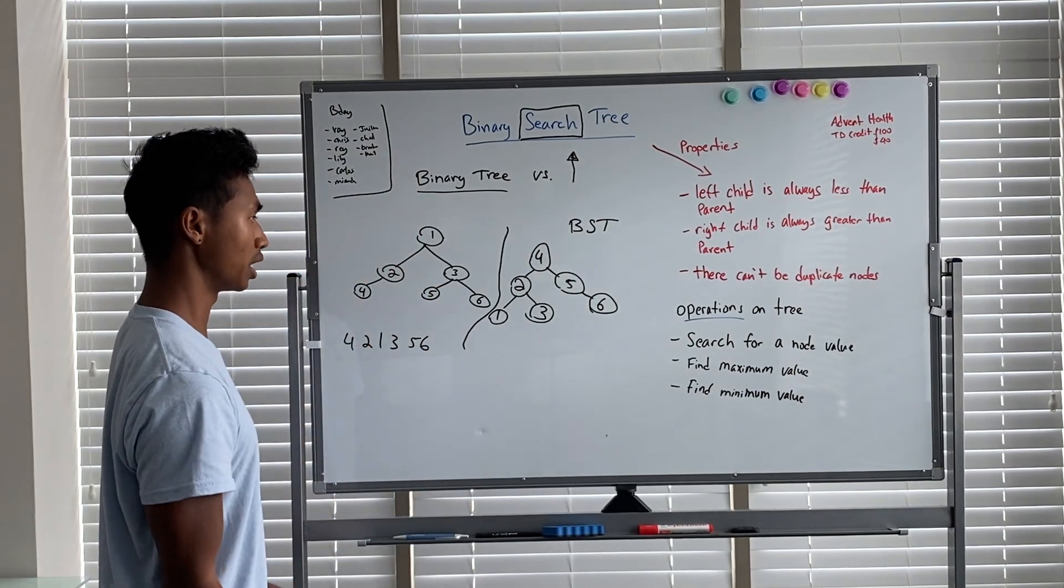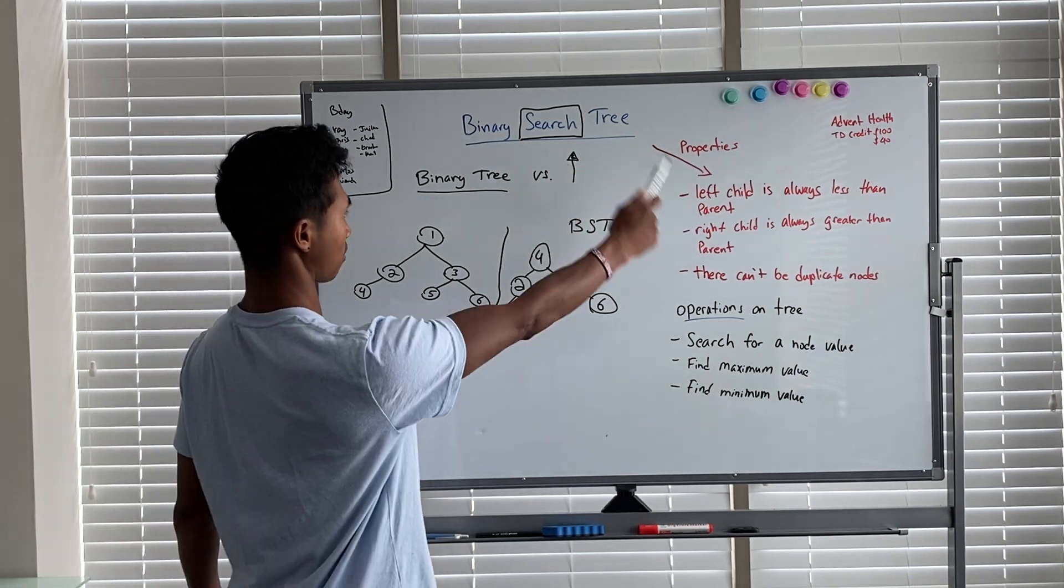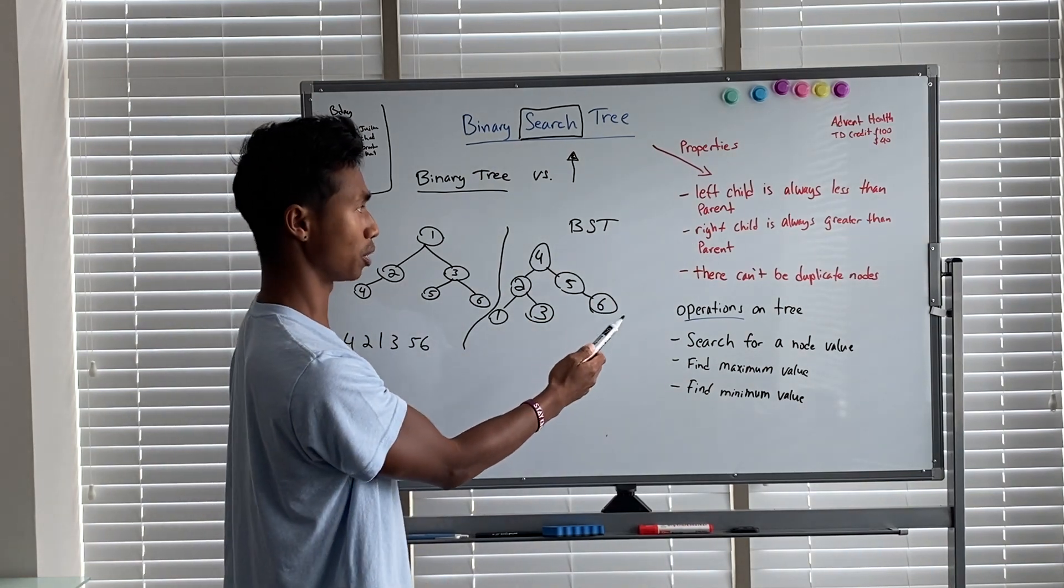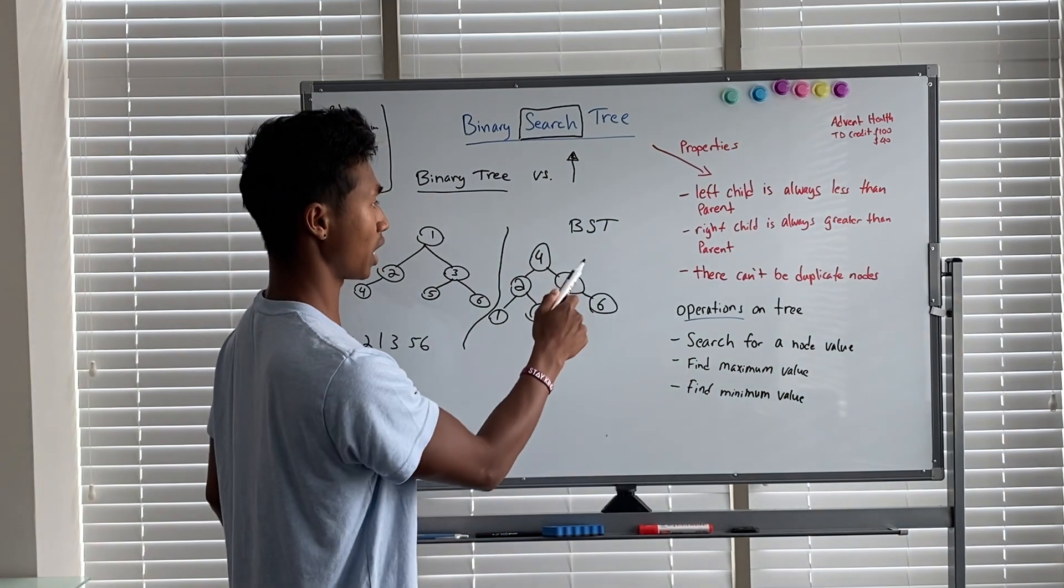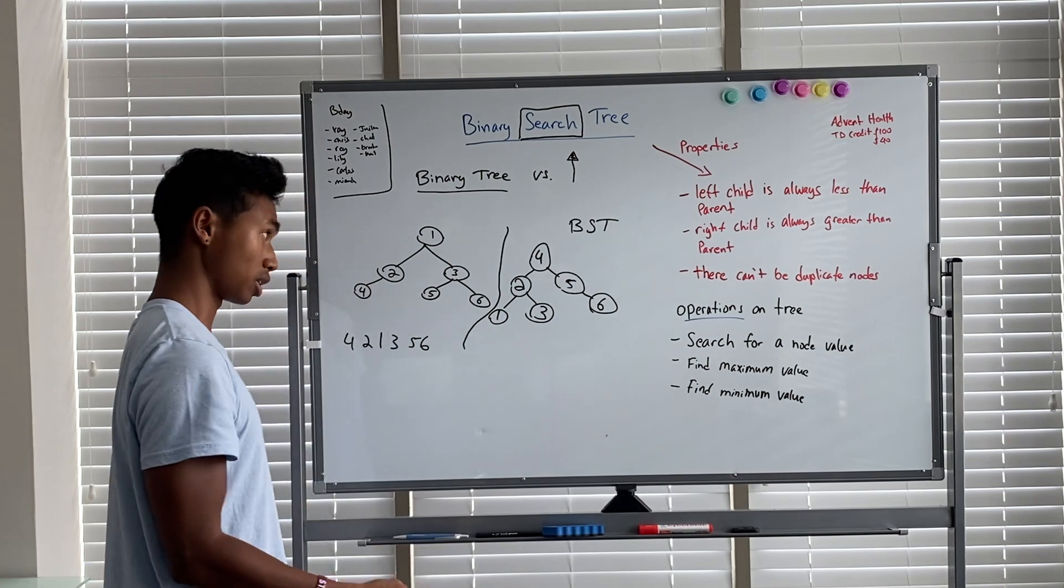binary tree. The main fundamental difference you can see is that these abide by specific properties that are over here. Sorry, I didn't explain them at first. The left child is always less than the parent, the right child value is always greater than the parent, and there can't be any duplicates.